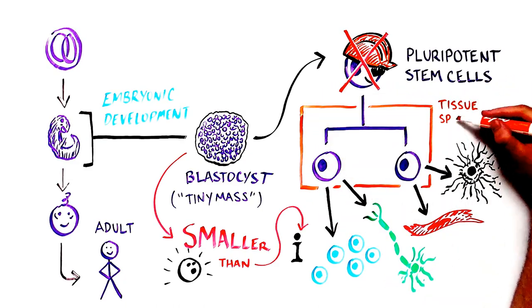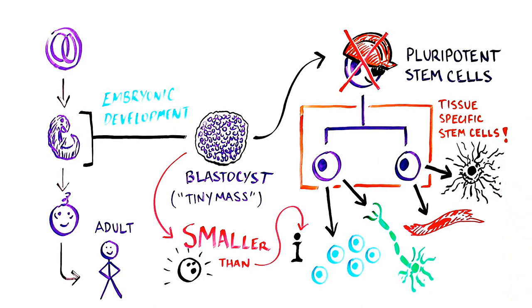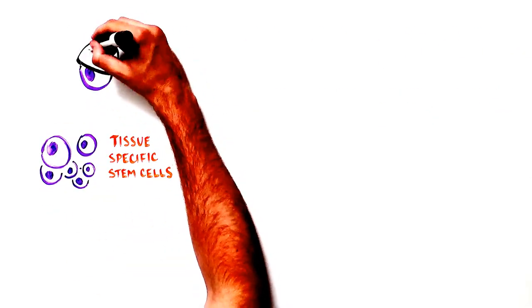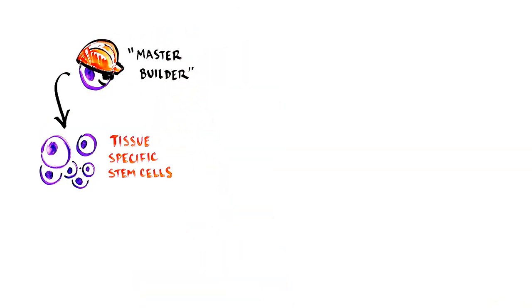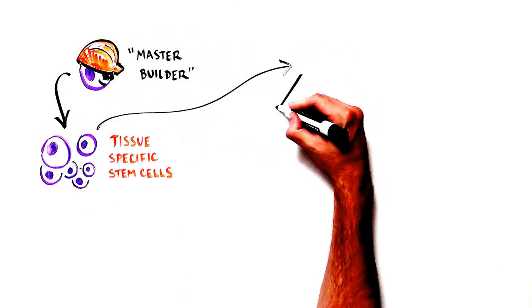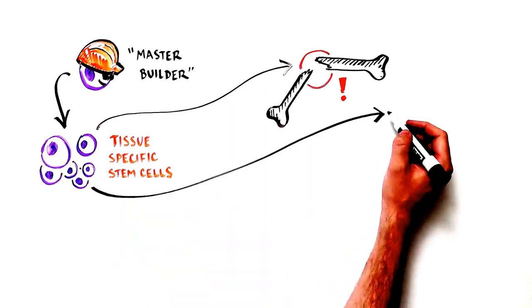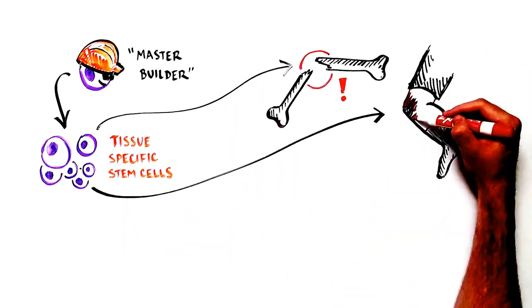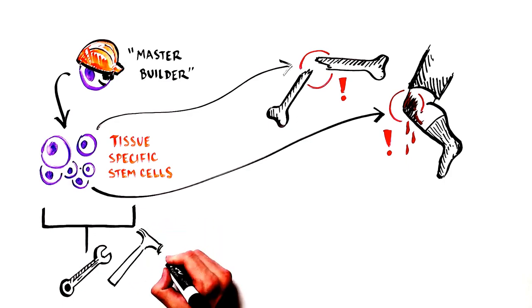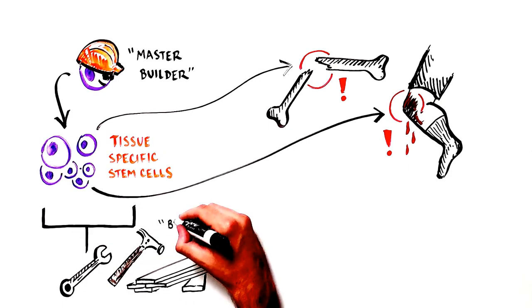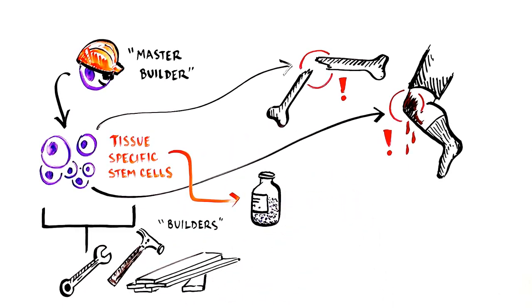After we're born, our bodies can be maintained and repaired by tissue-specific adult stem cells that remain in our bodies throughout life. Tissue-specific stem cells are derived from the master builder pluripotent cells and are responsible for our body's ability to repair itself after injury, such as broken bone or a skinned knee, and therefore act as the builders, each of which is responsible for repairing a specific type of tissue.